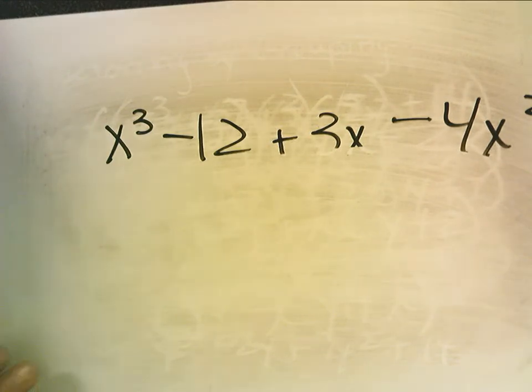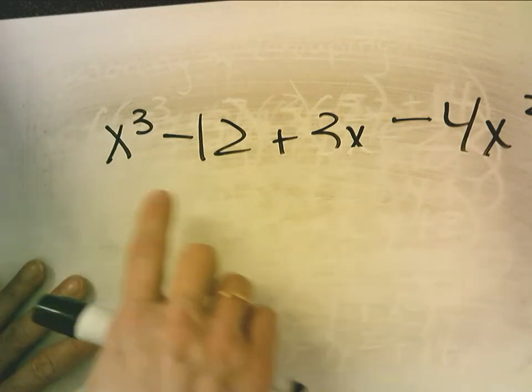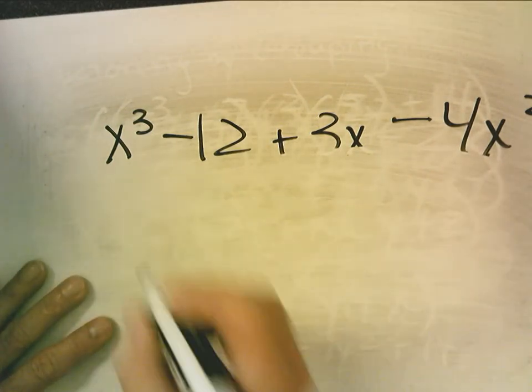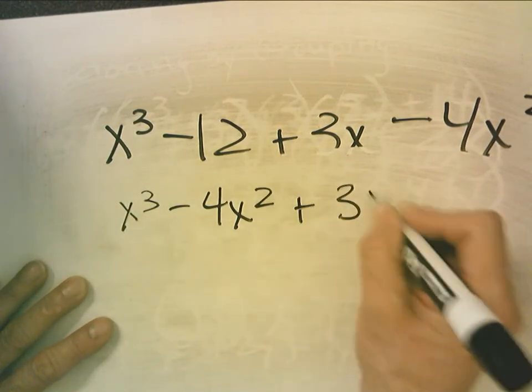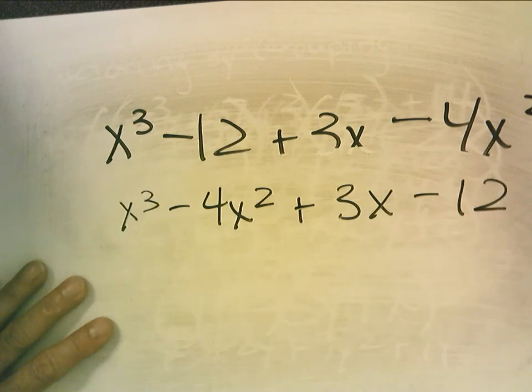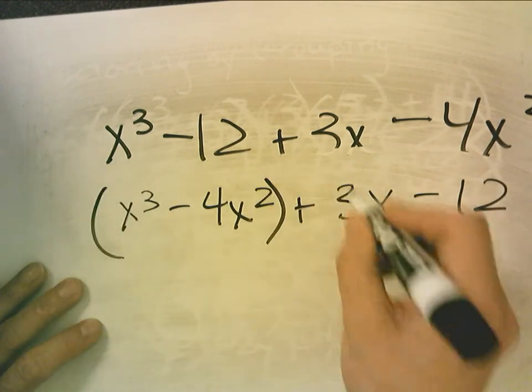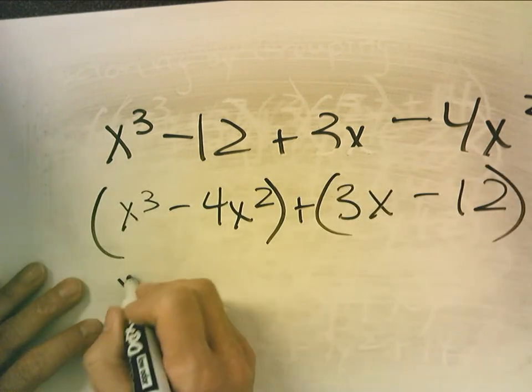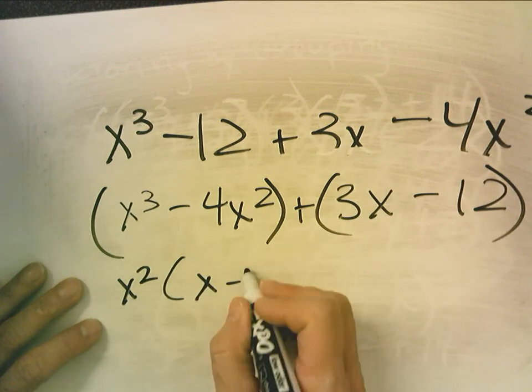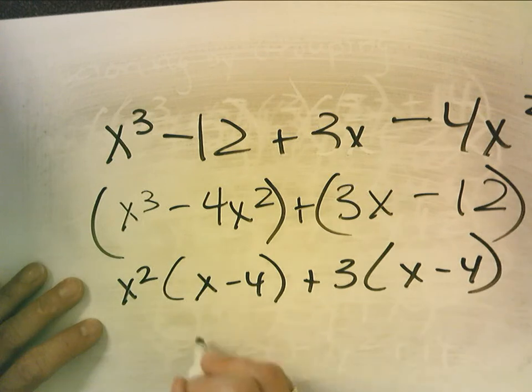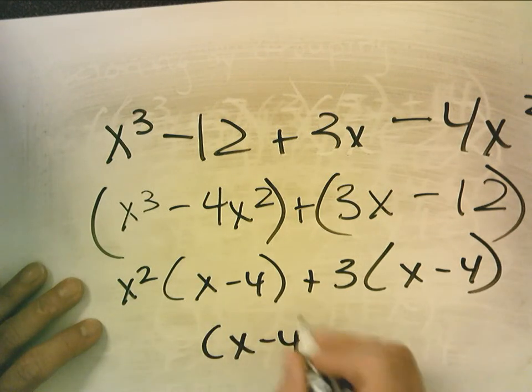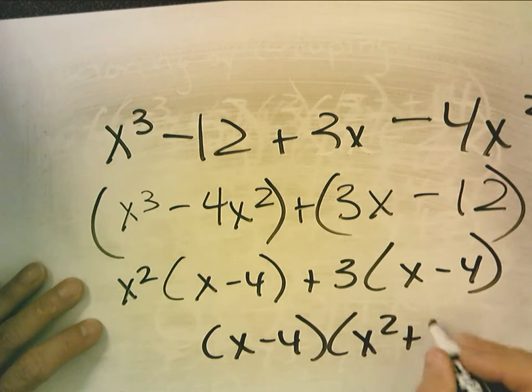Now, notice this is not written in descending order. So I'm going to rewrite it in descending order and see if that helps me. And if factoring by grouping will work. So I'm going to group those two and group these two. I take out x squared. I get x minus 4. I take out a 3. I get x minus 4. So this becomes x minus 4 times x squared plus 3.